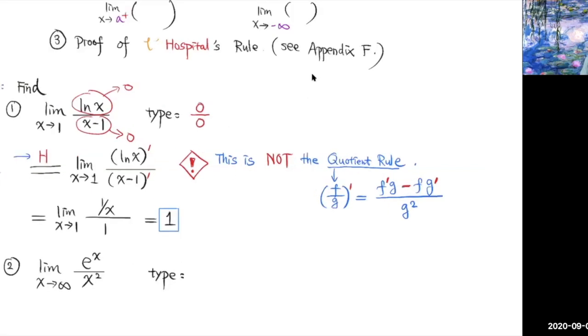Be very careful: L'Hopital's rule is different from the quotient rule. The quotient rule is used when you differentiate a quotient, but with L'Hopital's rule, you're taking the limit of a quotient and differentiating the numerator and denominator separately. Be careful to distinguish between L'Hopital's rule and the quotient rule — do not confuse them.